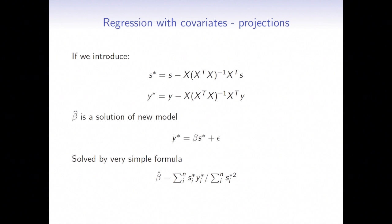spanned by the columns of X matrix. And then we can show mathematically that the beta that we are interested in is a solution of a new model. It's the regression through the origin. And now the solution for the beta is even simpler because no centering is involved.